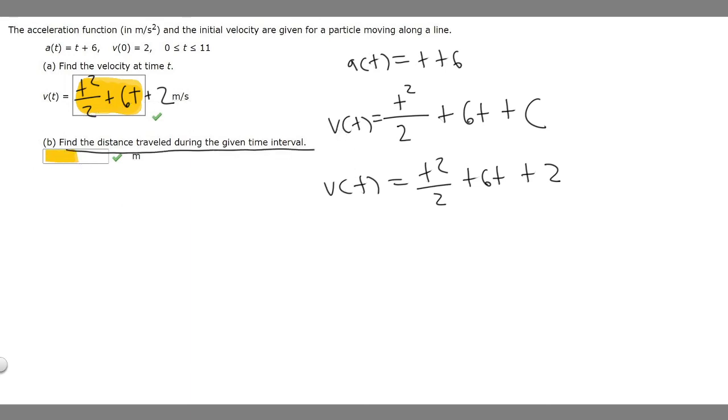Now for part b, it says find the distance traveled during the given time interval. So all we've got to do is take the integral of our velocity function for the time given. So let's set up our integral. Our lower bound is going to be 0 and our upper bound is 11, and then we put in our velocity function: t squared over 2 plus 6t plus 2 dt.